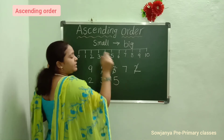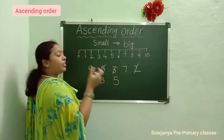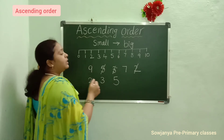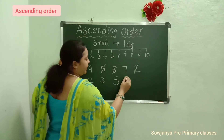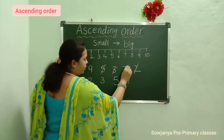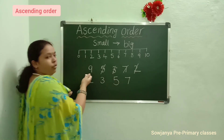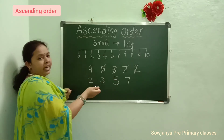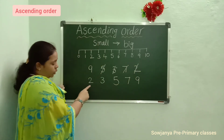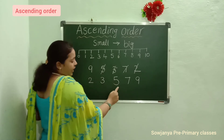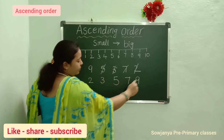Now 9 and 7. Which is the small number here from 9 and 7? See here which is the small number. Yes, 7. Cross this 7. Write this 7 down. Now observe the only one number is left — 9 — so it will be the big number. Now see: 2, 3, 5, 7, 9. Automatically it was becoming big, big, big.